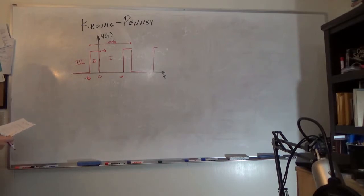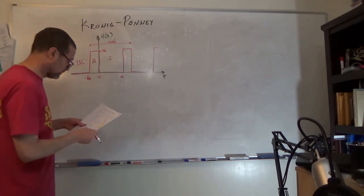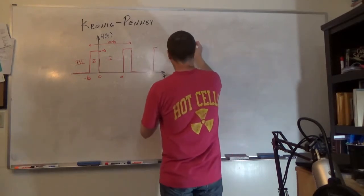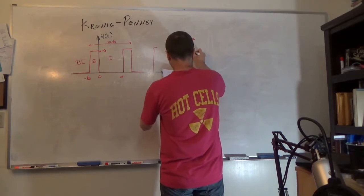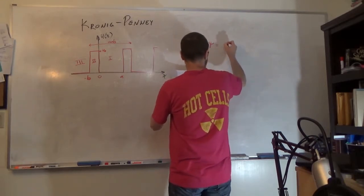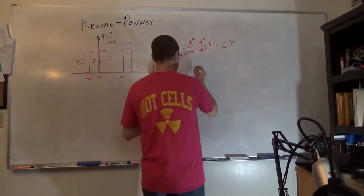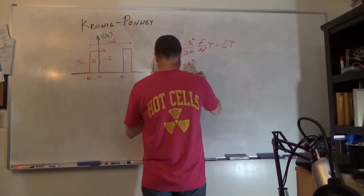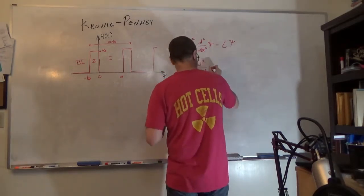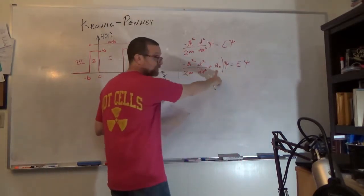So what we're essentially solving are two sets of problems. We can divide this into two regions of space. One region of space, we have a free electron, so 0 potential. We're solving minus h-bar squared over 2m, the second derivative with respect to position of psi is equal to E psi. That's the free electron region. And then in region 2, we're solving negative h-bar squared over 2m d squared dx squared plus u naught psi is equal to E psi. We've added in a potential energy term.